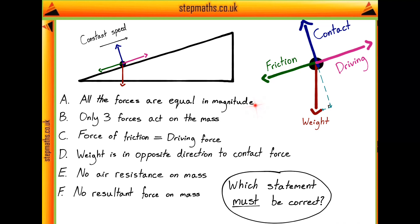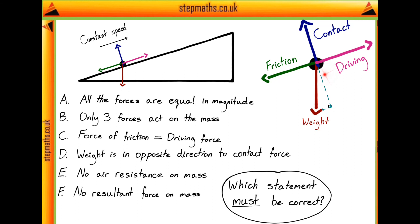Let's look at statement A, which says that all of the forces are equal in magnitude. Looking at our diagram and comparing forces in the direction perpendicular to the surface — that is, the contact force and the component of weight acting perpendicular to the surface — we know the ball isn't accelerating in this direction at all, since it stays on the surface. So the contact force and the perpendicular component of weight must be equal to one another.